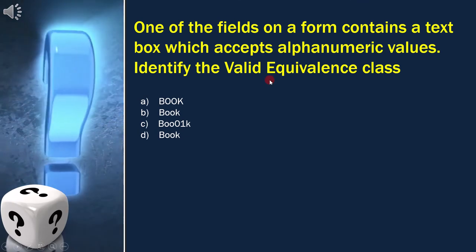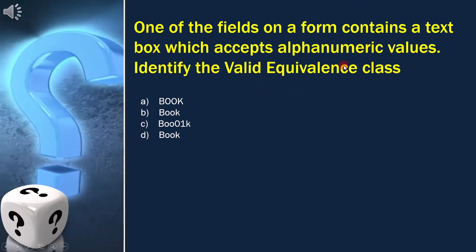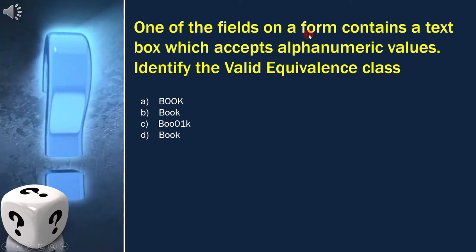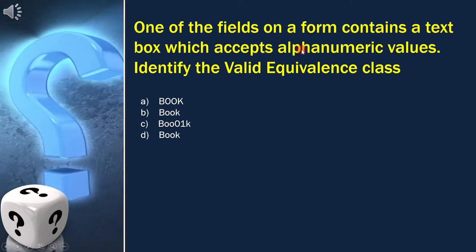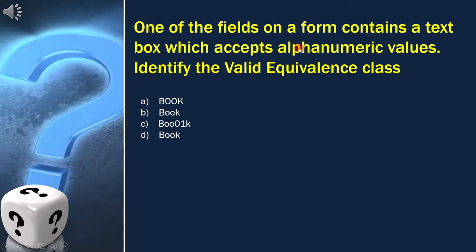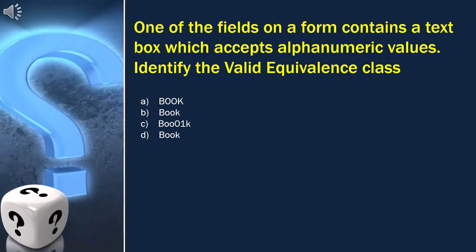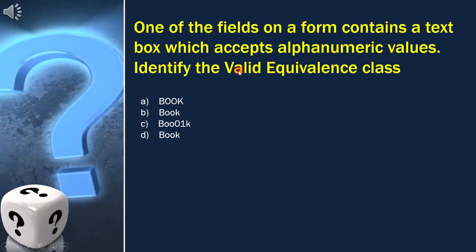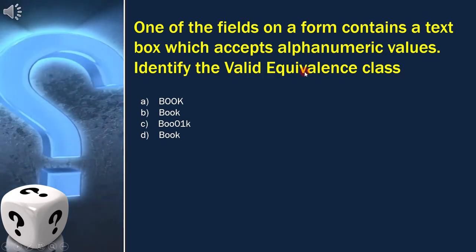Here we need to concentrate on two points. First, the field accepts alphanumeric values. Alphanumeric means both alphabets and numeric. We need to find the valid equivalence values from these options.